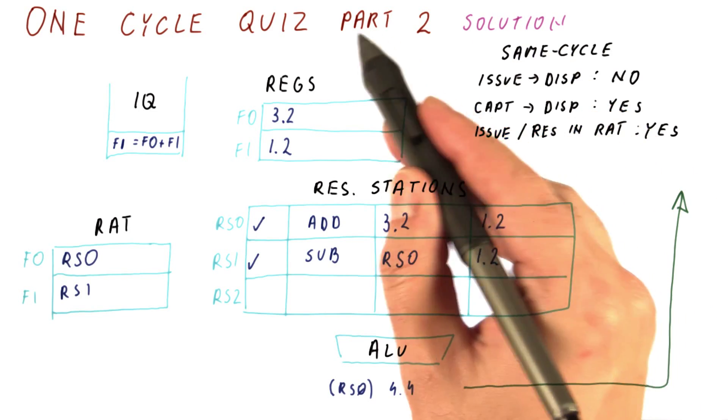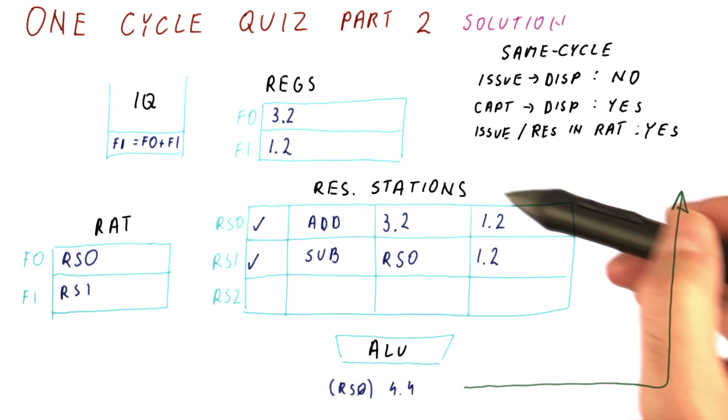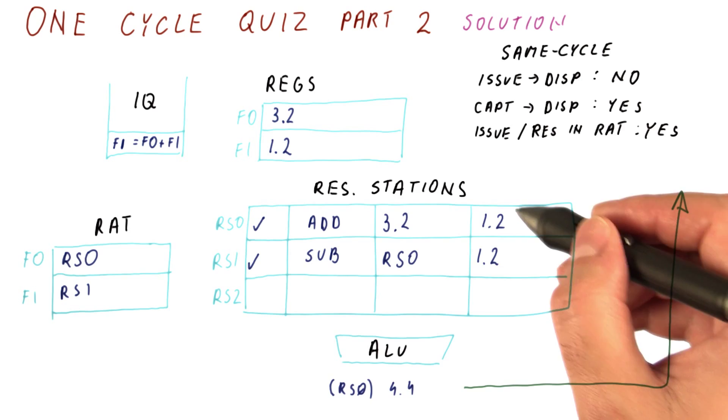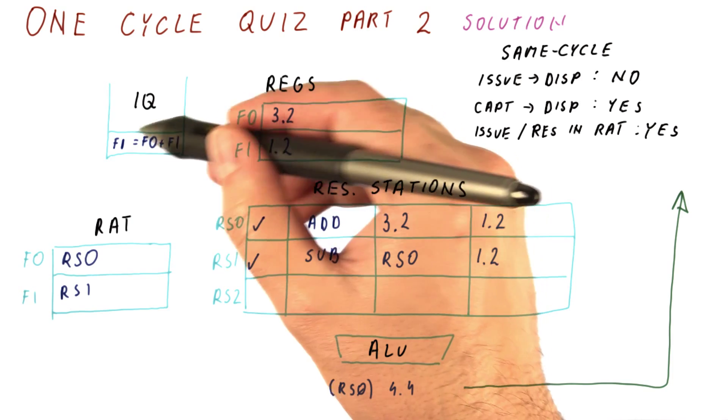Let's look at the solution for part two of our one cycle quiz, where we are looking at the reservation stations and trying to figure out what's happening to them. To figure out what happens to reservation stations, we need to figure out whether there is something that issues.